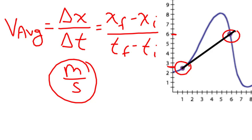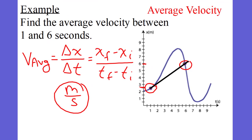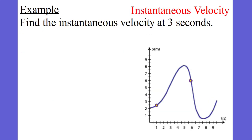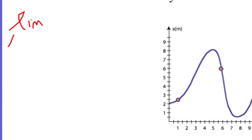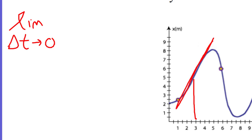The average velocity doesn't tell you the whole story — it just tells you the change in position divided by the change in time. If we wanted more exact information, we might want to know the instantaneous velocity, which is the average velocity over a very, very small interval of time. This means the limit as the change in time approaches zero. We're looking at what is the instantaneous velocity right here at three seconds — specifically, what is the slope at this exact instant of time.